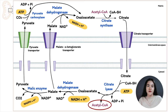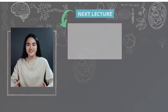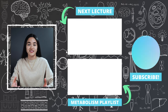In summary, fatty acid synthesis requires acetyl-CoA, malonyl-CoA, fatty acid synthase, and NADPH. The first acyl comes from acetyl-CoA; subsequent acyls come from malonyl-CoA. Acetyl-CoA is transported from the mitochondrial matrix to the cytosol via the citrate shuttle, and NADPH is obtained from the malic enzyme reaction and the pentose phosphate pathway.